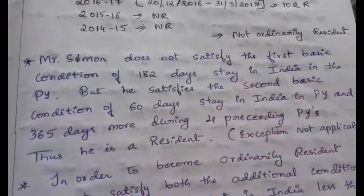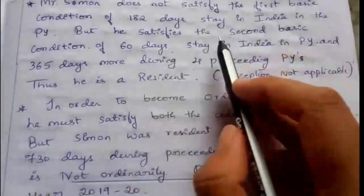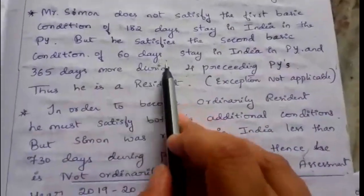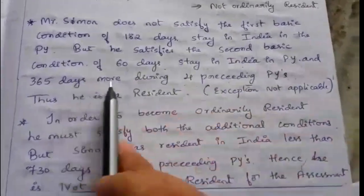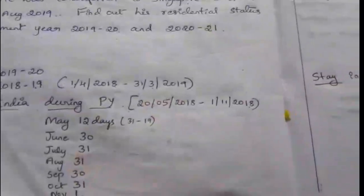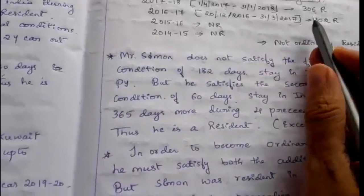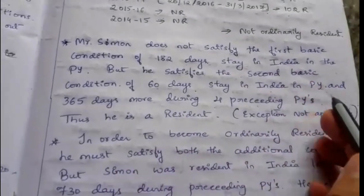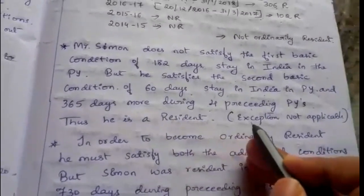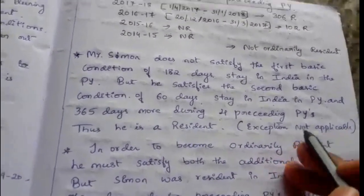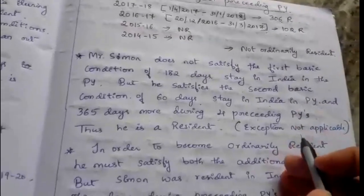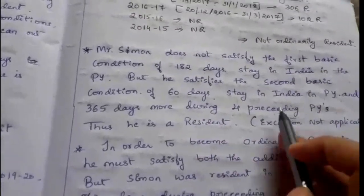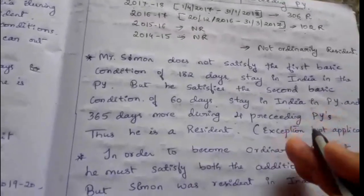See the note: Simon does not satisfy the first basic condition of 182 days stay in India in the previous year. But he satisfies the second basic condition - 60 days stay in India during the previous year and more than 365 days in the four preceding previous years. So he becomes a resident in India. Since he is an American citizen, the exception rule is not applicable. He can satisfy 60 days to become a resident. The exception is not applicable to him because he is an American citizen.